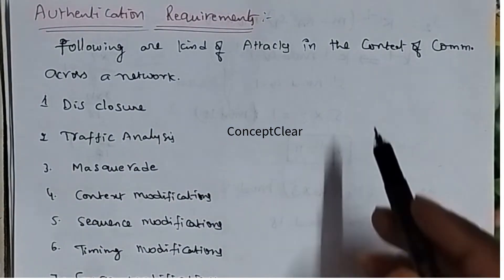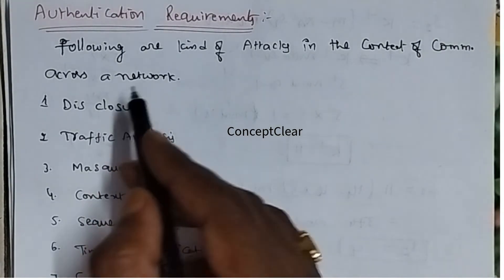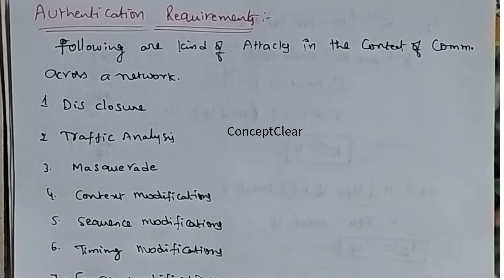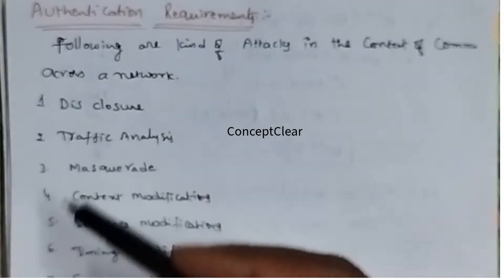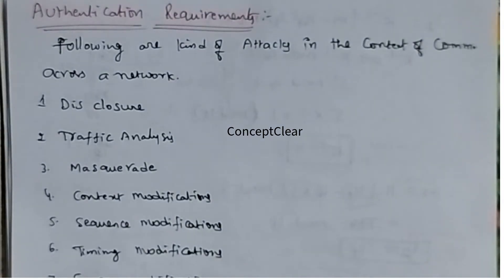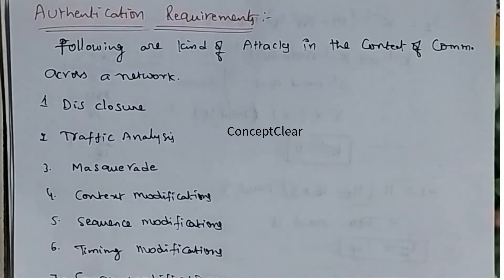Here we have the following kinds of attacks in the context of communication over the network. Generally, when data is exchanging between sender to receiver, the following types of attacks will happen — and we check whether it is a genuine user or not.